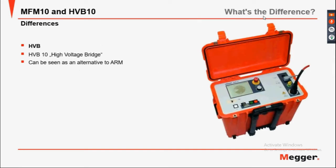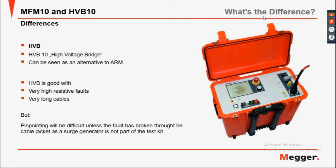The HVB10 is a high voltage bridge, which is an alternative to the Murray (resistance) method. The HVB is good with very high-resistant faults and very long cables, up to approximately 200 km. However, pinpointing will be difficult unless the fault is broken through the cable jacket, and the surge generator is not possible to test it.